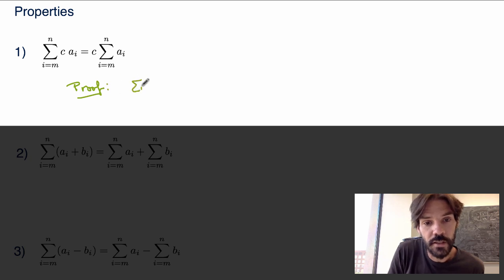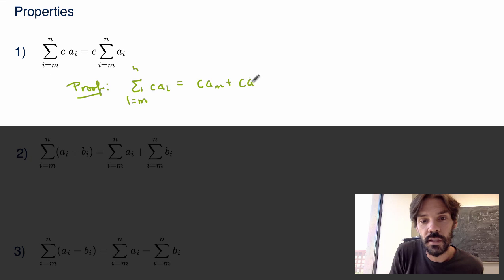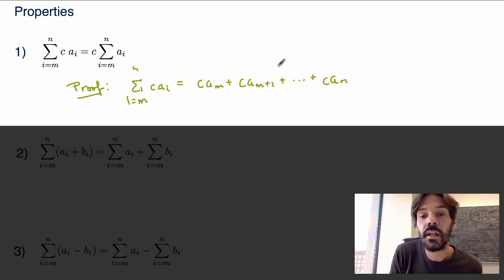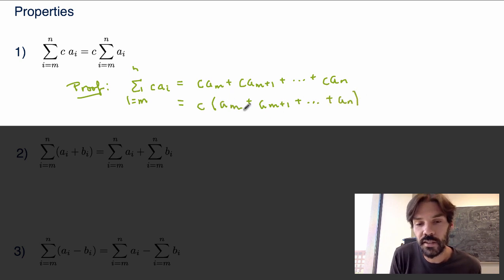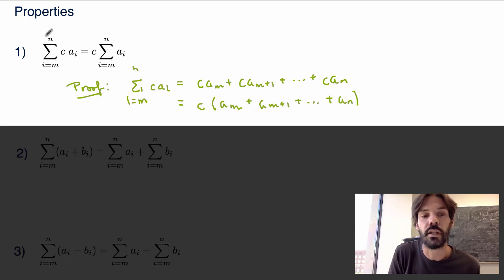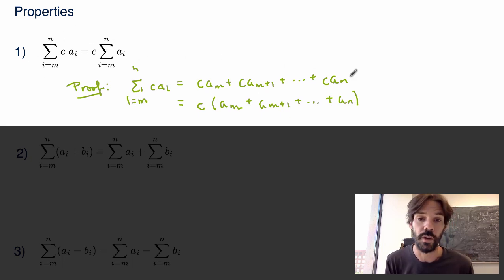Let me prove that. If I take the left-hand side — the sum from i equals m to n of c times a_i — that means I have c·a_m plus c·a_{m+1} plus so on all the way to c·a_n. I can factor out c to get c times the sum of the a terms all the way to a_n. That expression in brackets is exactly the sum of the a_i from m to n, so the left-hand side equals the right-hand side.